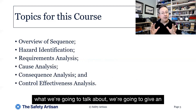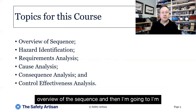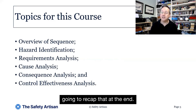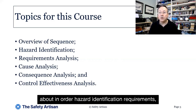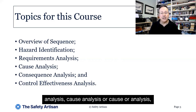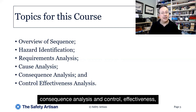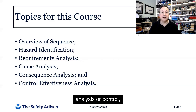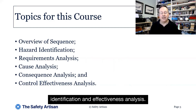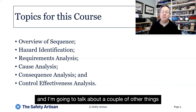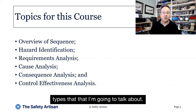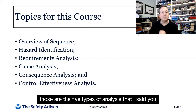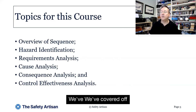So what we're going to talk about: we're going to give an overview of the sequence, and I'm going to recap that at the end. The five types of analyses we're going to talk about in order are: hazard identification, requirements analysis, cause or cause-of analysis, consequence analysis, and control effectiveness analysis — or control identification and effectiveness analysis. Those are the five main types. And with those, we've already covered off one learning objective.